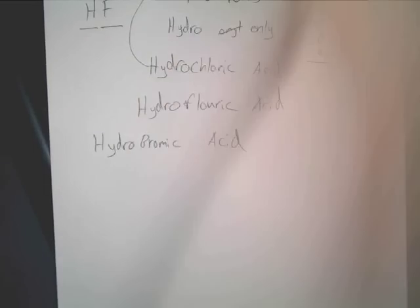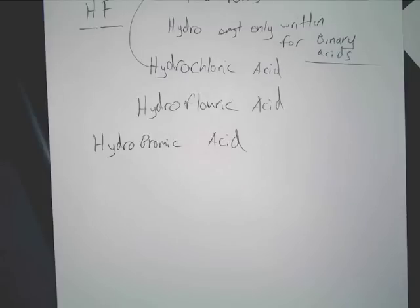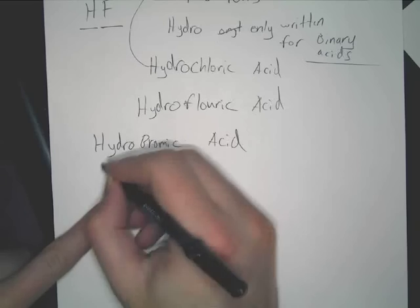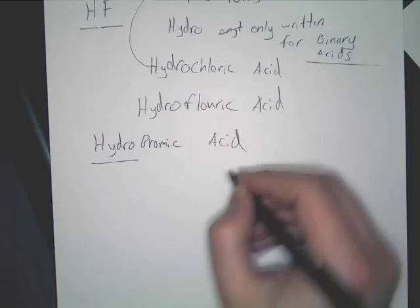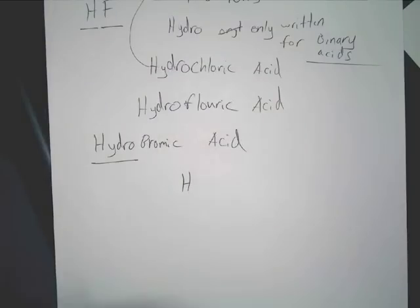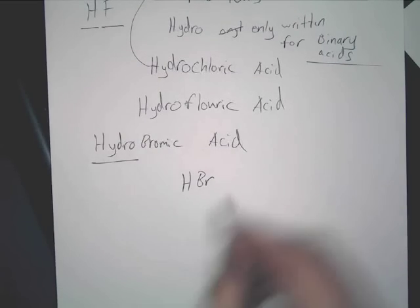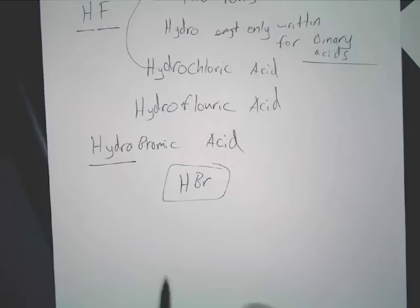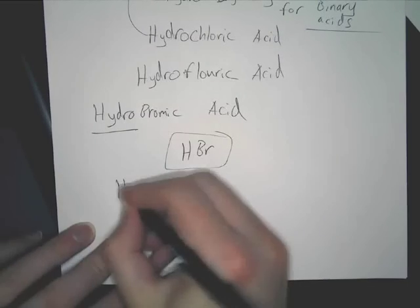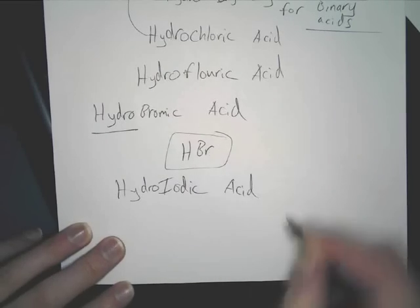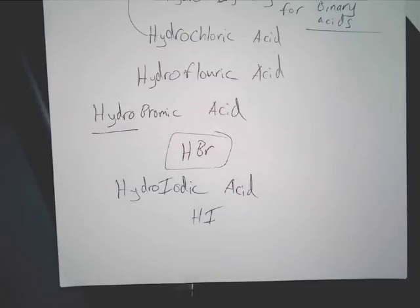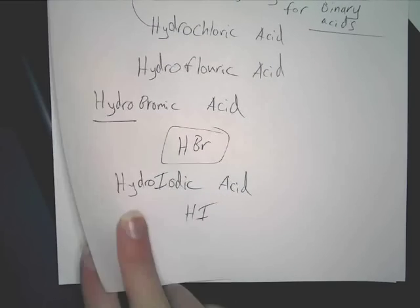You'll be responsible for translating a name into a chemical formula. To do this with 'hydrobromic acid': first you see 'hydro,' which means it's binary and there's no oxygen. You also see 'acid,' which means write an H automatically. The second element is 'bromic,' so it's bromine — that's it, HBr. Similarly, hydroiodic acid would be HI.